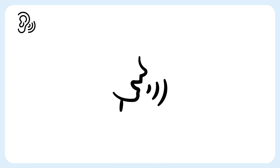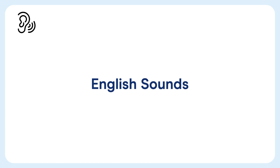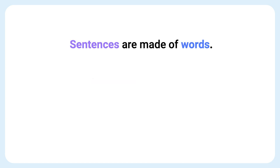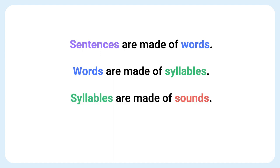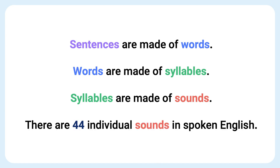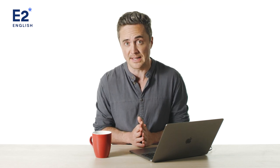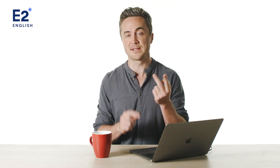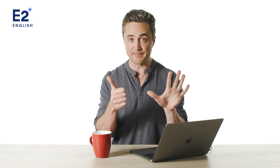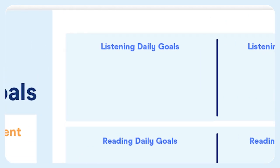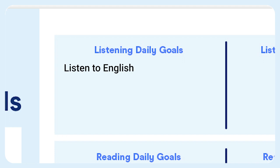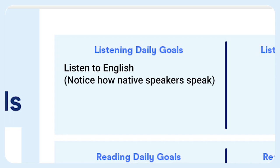And spoken English consists of English sounds. Sentences are made of words, words are made of syllables, and syllables are made of sounds. There are 44 individual sounds in spoken English — do you know them all? There are also other parts of spoken English: not just the 44 vowel and consonant sounds. For example, spoken English has word stress, sentence stress, intonation, connected speech, and pausing and rhythm. On your downloadable goal setter for daily practice, write: listen to English — and in brackets, write: notice how native speakers speak.